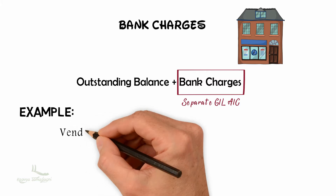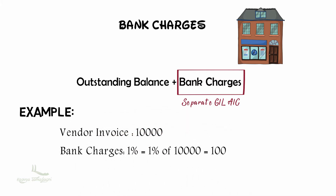In the accounts payable process, let's say the company has purchased from the vendor for the amount of ten thousand, so the outstanding amount to be paid is ten thousand. To clear this payment, you initiate a fund transfer request with the bank — transferring funds from the company's account to the vendor's account. To complete this transaction, the bank charges are one percent — if the invoice amount is ten thousand, that is one hundred rupees.